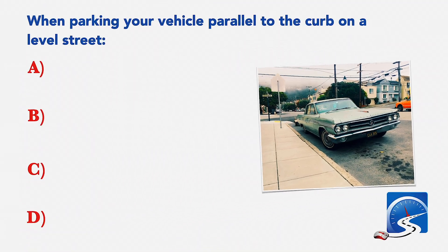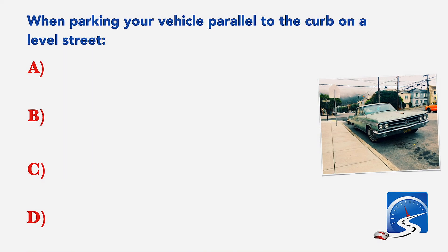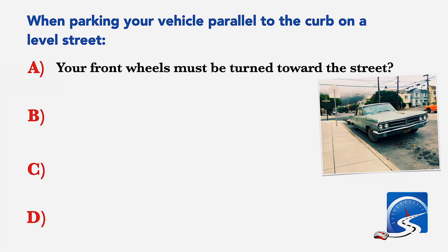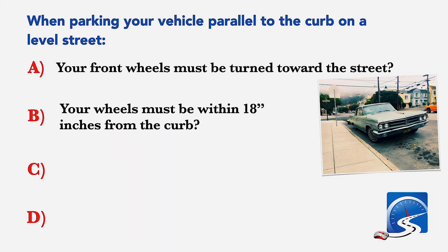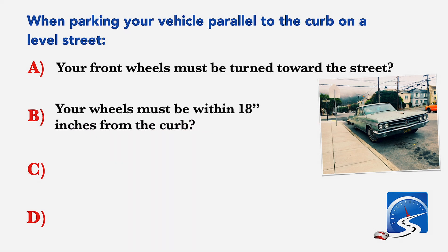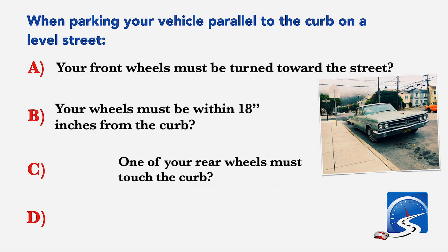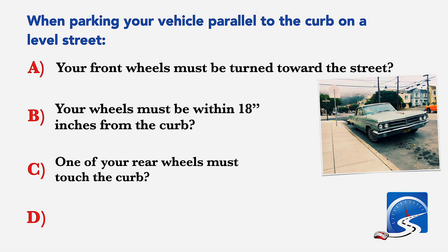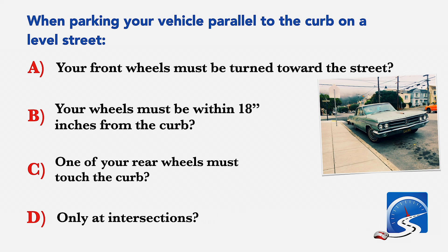When parking your vehicle parallel to the curb on a level street: A: Your front wheels must be turned toward the street. B: Your wheels must be within 18 inches from the curb. C: One of your rear wheels must touch the curb. D: Only at intersections. Correct answer B: Your wheels must be within 18 inches from the curb.